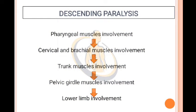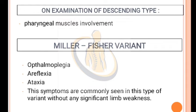Descending Paralysis — involvement chronology: Pharyngeal muscles are involved first, followed by cervical and brachial muscle involvement, then trunk muscle involvement, then pelvic girdle muscles, and lastly lower limb involvement. The major clinical feature of the descending type is pharyngeal muscle involvement.